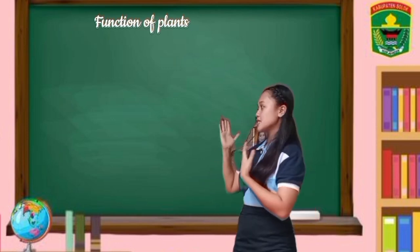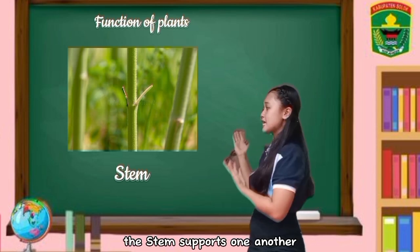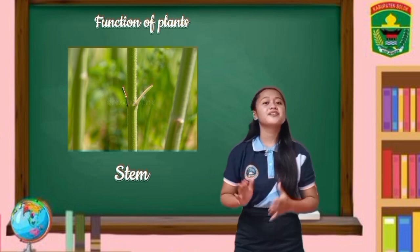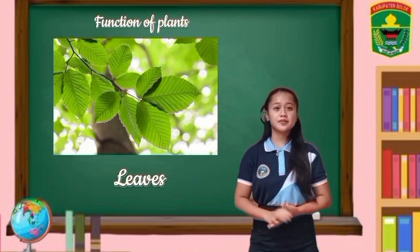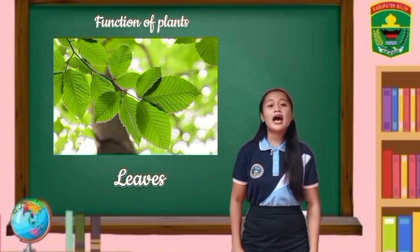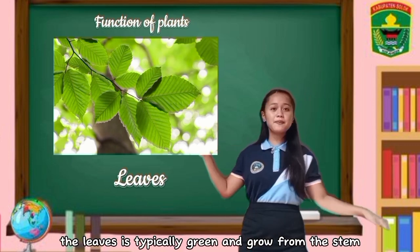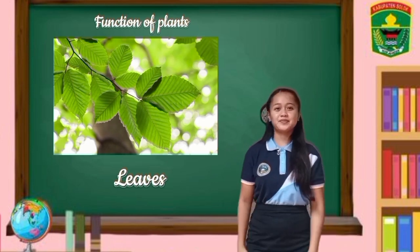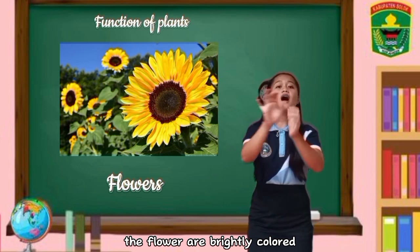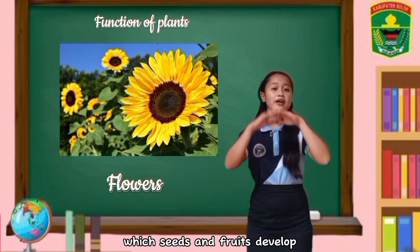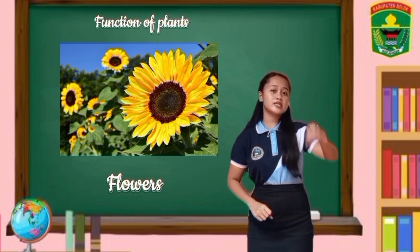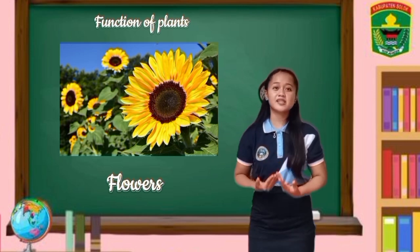Now let's move on to the stem. Mirror me: the stem supports the plant. Let's do it again: the stem supports the plant. Very good. Now let's move on to the leaves. Mirror me: the leaves are typically green and grow from the stem. Very good, class. How about the flowers? Mirror me: the flowers are brightly colored, from which seeds and fruits develop. Let's do it again: the flowers are brightly colored, from which seeds and fruits develop. Very good, class.